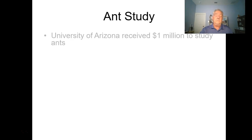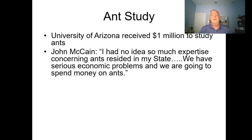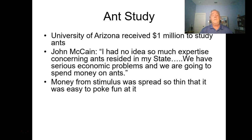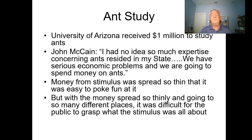A classic example: the University of Arizona received $1 million to study ants. Senator John McCain said, 'I had no idea so much expertise concerning ants resided in my state—we have serious economic problems and we're spending money on ants.' Money for stimulus was spread so thin it was easy to poke fun at. With the money going to so many different places, it was difficult for the public to grasp what the stimulus was all about or see how it was helping the economy.